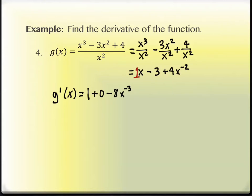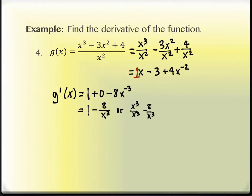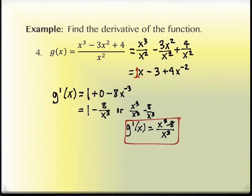Again, on your quiz next week you can leave the answer with negative exponents. But for everything else we're doing, you'll simplify. Simplifying means no negative exponents — move x cubed back to the denominator. I'm fine with you leaving it as 1 minus 8 over x cubed. The back of the book might also combine it to get a common denominator, writing it as x cubed minus 8 over x cubed. Both forms are correct — either is fine as the final answer.